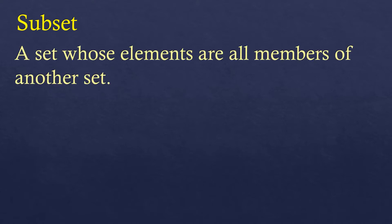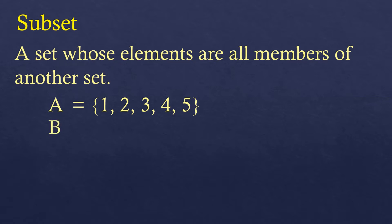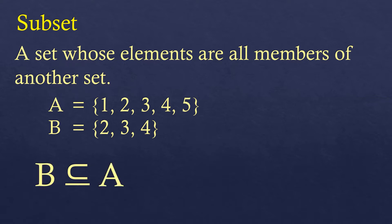Now let's talk about subsets. A subset is a set whose elements are all members of another set. For example, set A is composed of elements 1, 2, 3, 4, and 5, and set B is composed of elements 2, 3, and 4. As you can observe, the elements of set B can all be found in set A. A subset is denoted with a symbol that looks like a C with an underline at the bottom. Since all elements in B can be found in A, we say set B is a subset of set A.